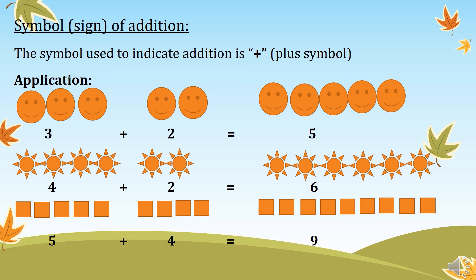We have another example: two groups of squares. The first group contains five squares and the second group contains four squares. The sum of the first and second group is one, two, three, four, five, six, seven, eight, nine. The first group of five squares and the second group of four squares gives a group of nine squares.